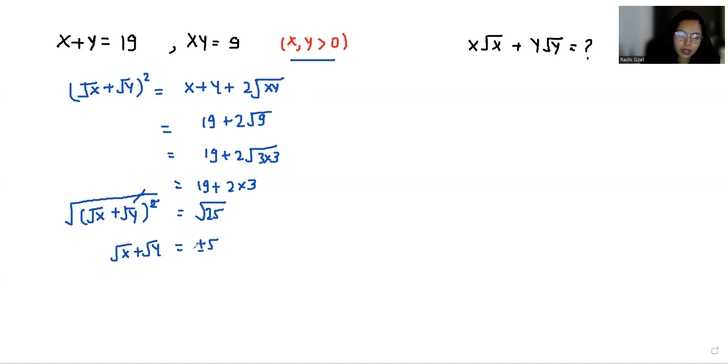So root x plus root y equals 5 whole cube. Now I'm going to use the very famous identity a plus b whole cube, which equals a cube plus b cube plus 3 times ab in bracket a plus b.